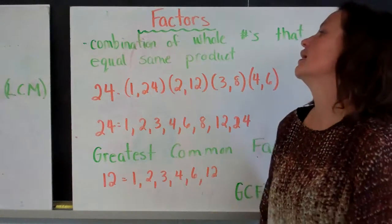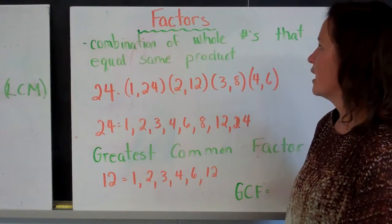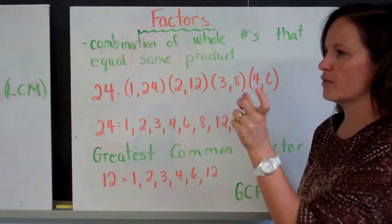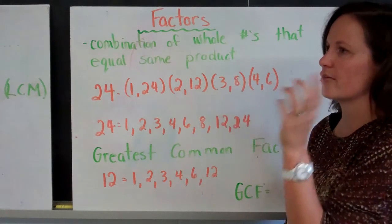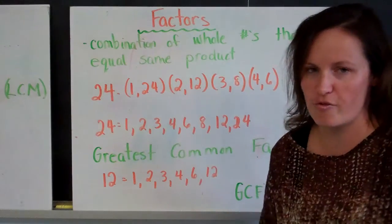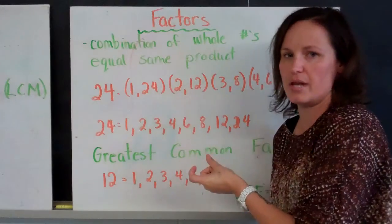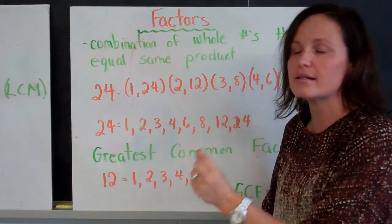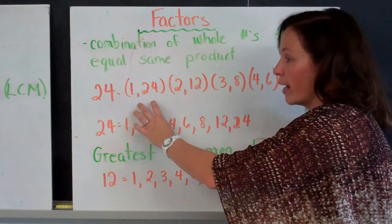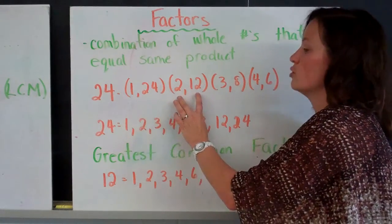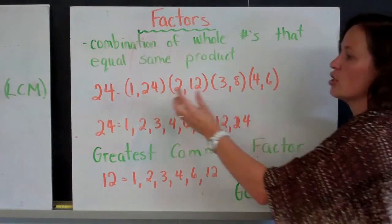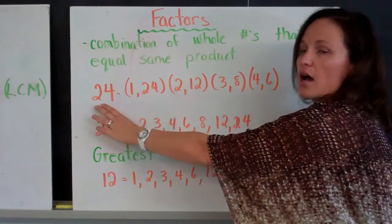Factors. Now, factors is a combination of whole numbers that equal the same product. So it's two numbers, a combination of two numbers that when multiplied together equal the same number. So for example, if I'm looking for the factors of 24, I'm looking for all of those combinations that when they're multiplied together, their product equals 24. So I can think of 1 times 24, 2 times 12, 3 times 8, 4 times 6. So these are all factors of 24.